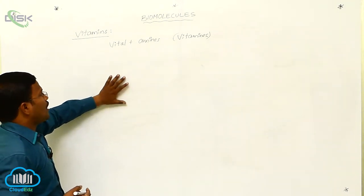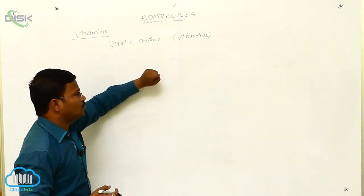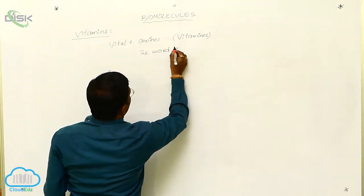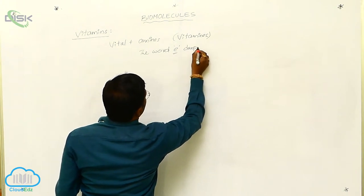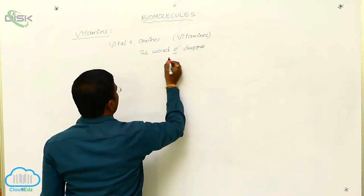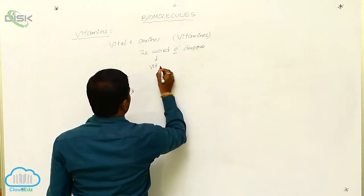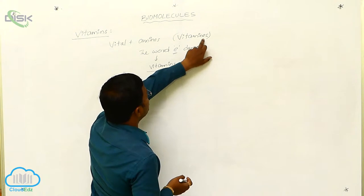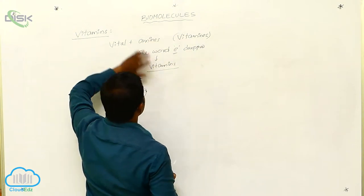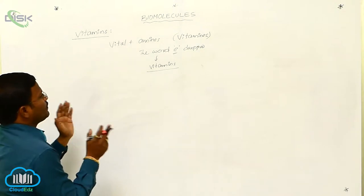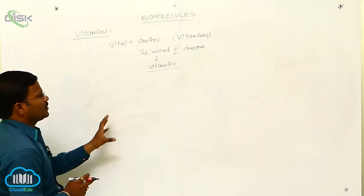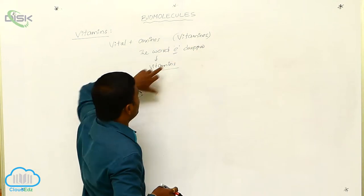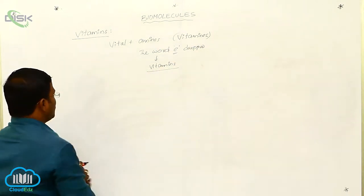But in later days, it was found that almost all vitamins are devoid of amine functional groups. To clarify this, the letter 'e' was dropped from 'vitamines,' and it is now called 'vitamins' — because these vitamins do not consist of an amine functional group at all.